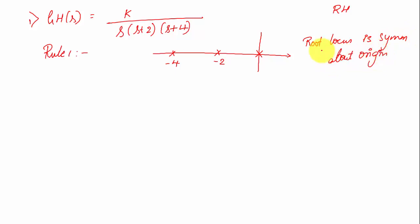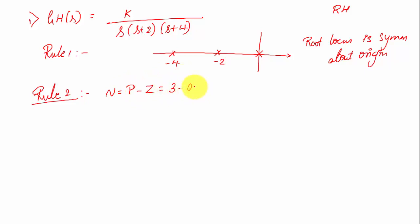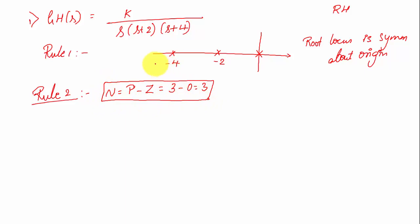Rule 2: Number of root loci branches is given by n = p − z. There are three poles and no zeros, so there are three root loci branches. If they ask whether root locus exists at s = −3, use the shortcut: count poles and zeros to the right of that point.